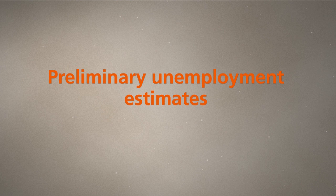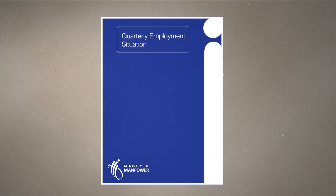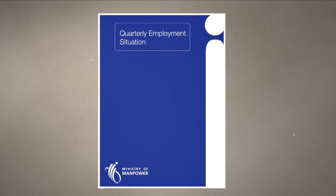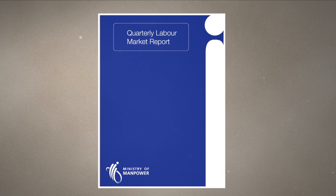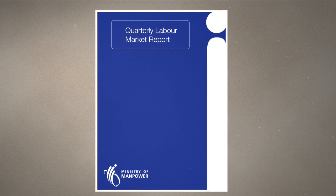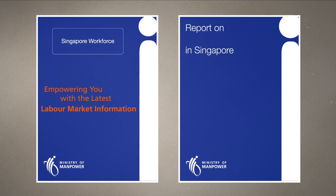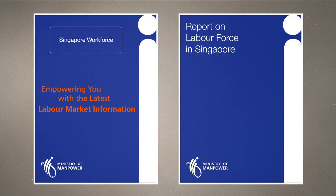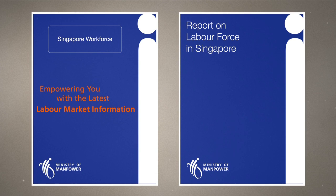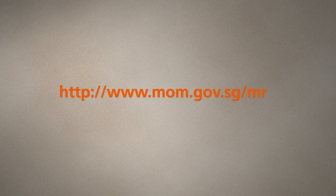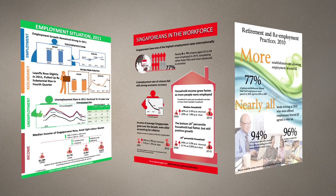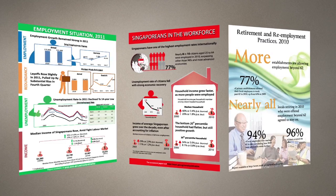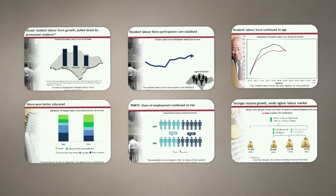Preliminary unemployment estimates are available in the quarterly employment situation release, while updated figures can be found in the quarterly labour market report. The employment rate is reported in the annual Singapore workforce and report on labour force in Singapore. These publications can be accessed on our website, where you can view other related modules in this series and obtain key statistical findings on the labour market in rich infographics and videographics.